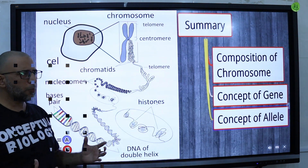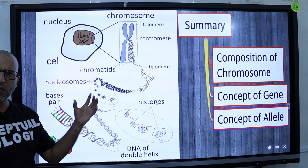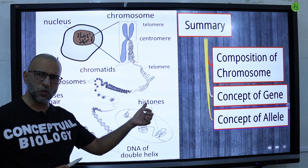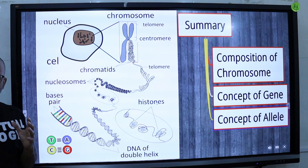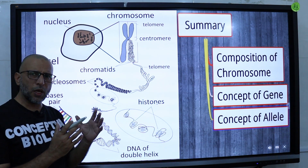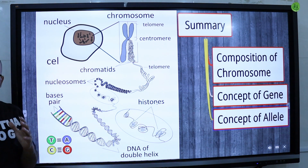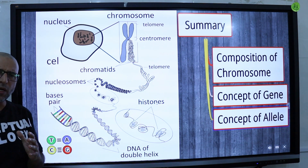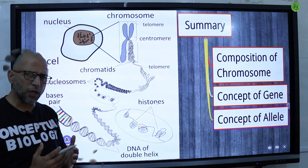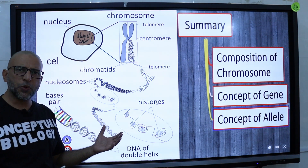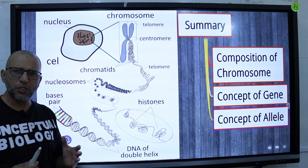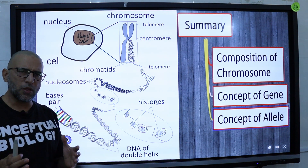To sum up: chromosomes are structural units made up of DNA and proteins known as histone. A gene that controls eye color has different alleles for blue, green, and brown, and a gene that controls hair color has different alleles for red, brown, and black. Genes are responsible for the expression of traits, and alleles are responsible for the variations in the given trait.